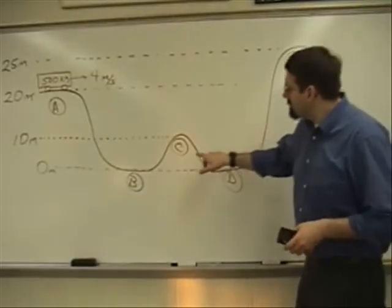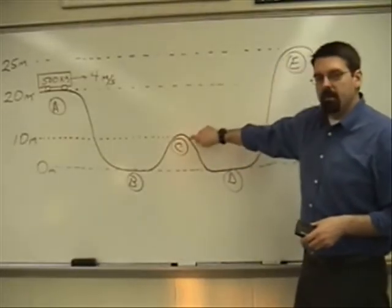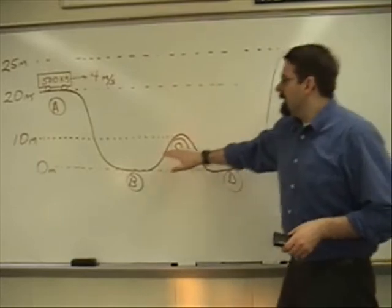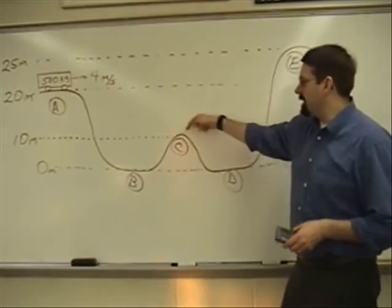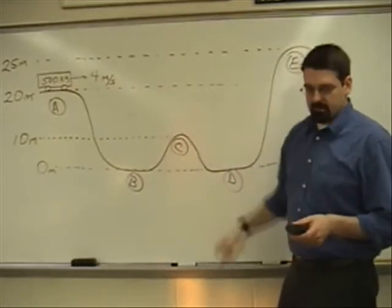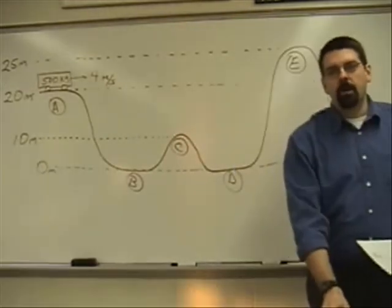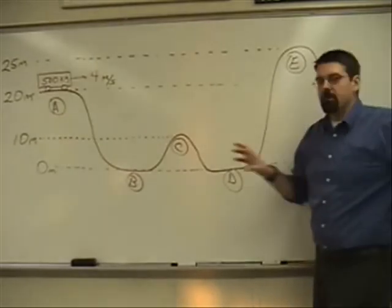The next question is, what is the speed of the cart at point C? It starts at 20, it's going to go down, it's going to rise up again to 10 meters, and back in again. At 10 meters above the ground, what is the speed at that point? Okay, so pause your video and find the answer.